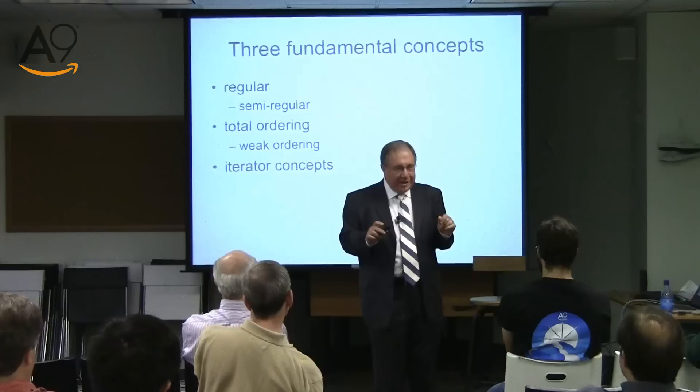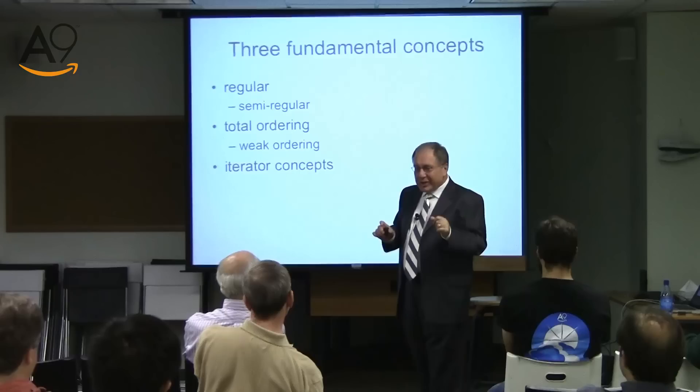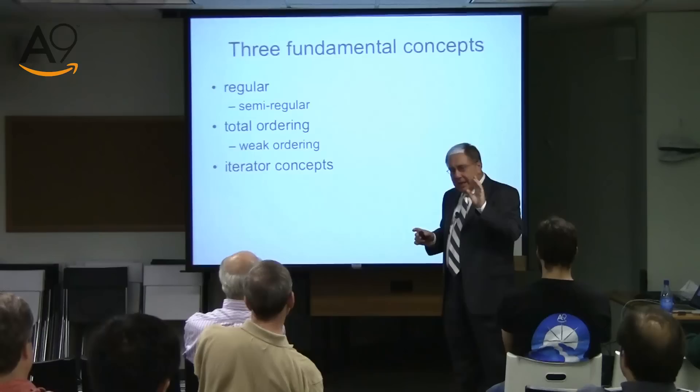If we figure it out, we obtain three fundamental concepts — three fundamental theories which underlie daily programming. Again: regular and the related notion of semi-regular, where maybe equality is not explicitly defined but nevertheless it exists. Then total ordering and something related to it called weak ordering — not to be confused under any circumstances with partial ordering. One of my disciples in his book defines max and min saying they require partial ordering. Well, he is very wrong — if you have partial ordering you cannot do min and max.